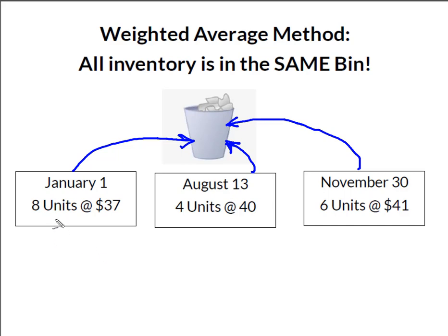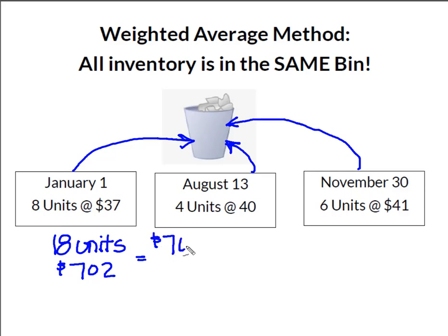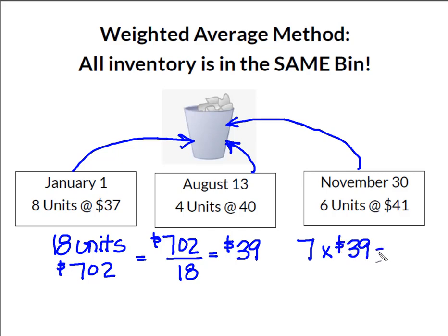When I take 8 times $37, 4 times $40, and 6 times $41, I get my 18 units at a total cost of $702. To get my weighted average I take $702 and divide it by 18 units, giving me a weighted average cost per unit of $39. I had 18 available and seven remaining, so my seven remaining units at $39 each gives me an ending inventory value of $273.